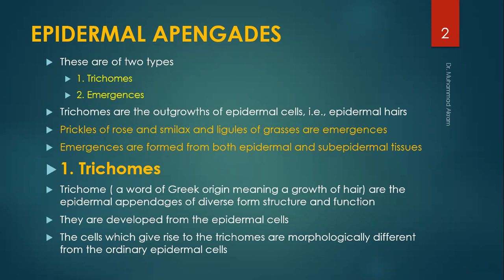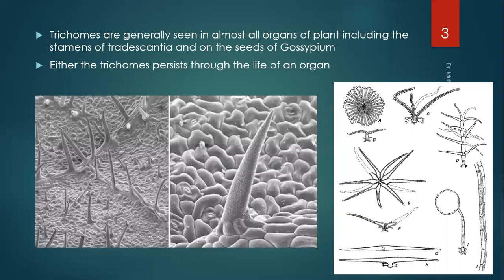Trichomes — a word of Greek origin meaning 'a growth of hair' — are the epidermal appendages of diverse form, structure and function. They are developed from the epidermal cells. The cells which give rise to the trichomes are morphologically different from the ordinary epidermal cells. Trichomes are generally seen in almost all organs of the plant, including the stamens of Tradescantia and on the seeds of Gossypium. Either the trichomes persist throughout the life of an organ.